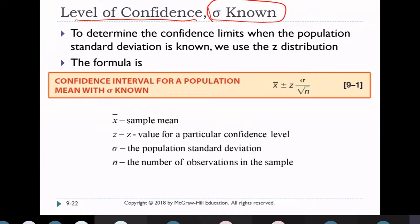The two cases depend on whether the standard deviation is known or not known. If sigma is known, we use the formula: x̄ ± z · (σ / √N), where x̄ is the sample mean, σ is the population standard deviation, and N is the number of observations in the sample.